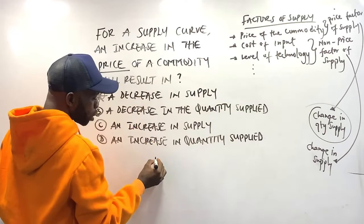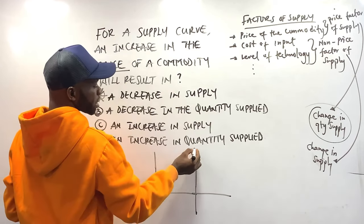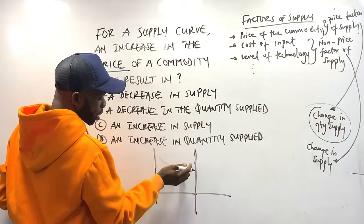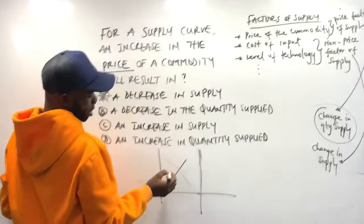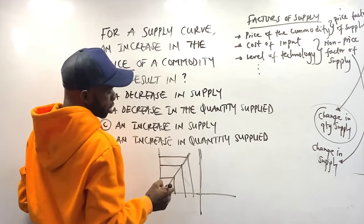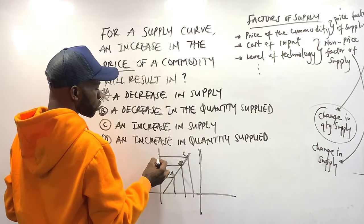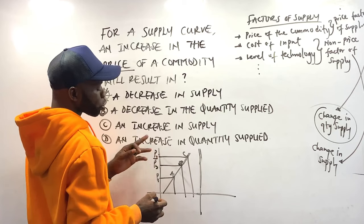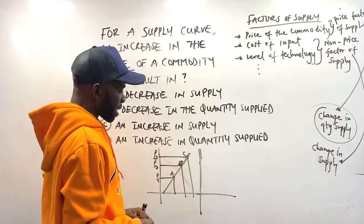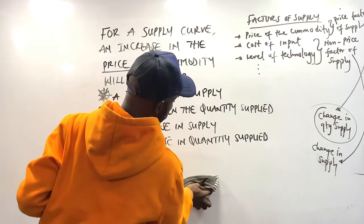We can consider two diagrams: one representing change in supply and another representing change in quantity supplied. For a supply curve, movement along the curve — from A to B to C — means price changes from P1 to P2 to P3 for quantity supplied to change. I need two diagrams for clarity.